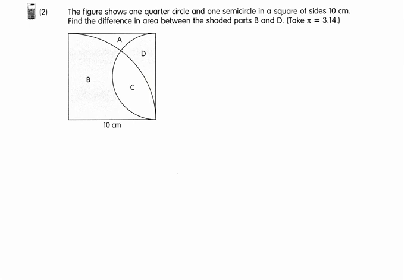Okay, find the difference in area between the shaded parts B and D, right? So, anyone has a suggestion on how to solve this question? Yes, Dylan? You want to find the area of quadrant first and then next? Okay. Take quadrant minus semicircle. Okay. Do you all agree with this answer?